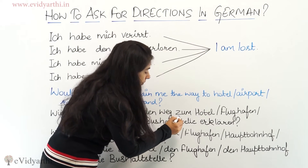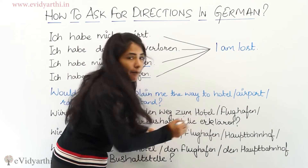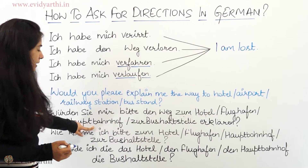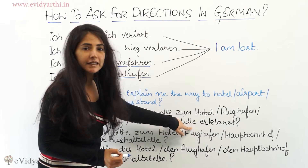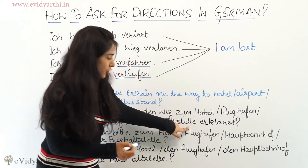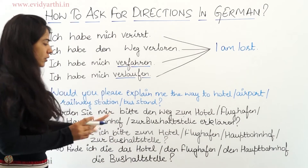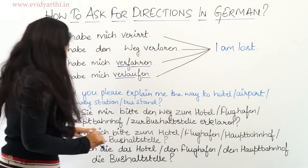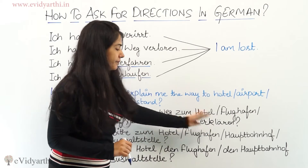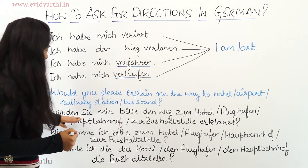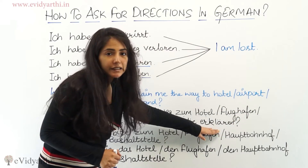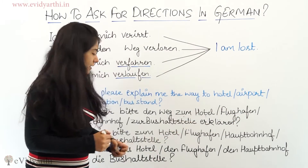Here we are using 'zum' because Hotel is masculine, Flughafen is also masculine, and Hauptbahnhof is also masculine. Bushaltestelle is feminine, so we use 'zur.' So if you want to ask about the hotel you would say: 'Würden Sie mir bitte den Weg zum Hotel erklären?' And for the airport: 'Würden Sie mir bitte den Weg zum Flughafen erklären?'